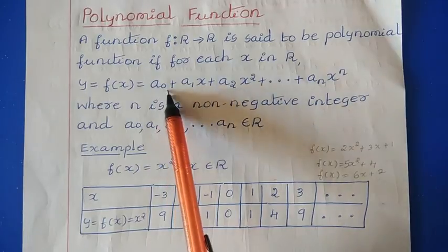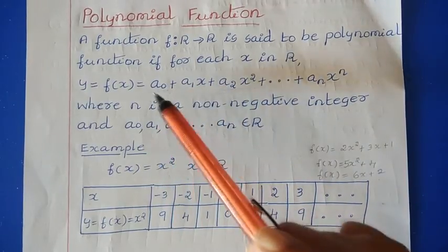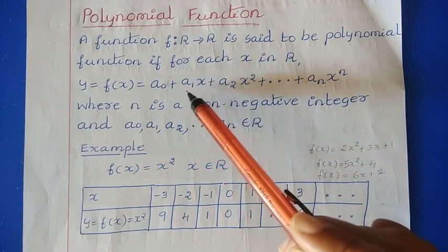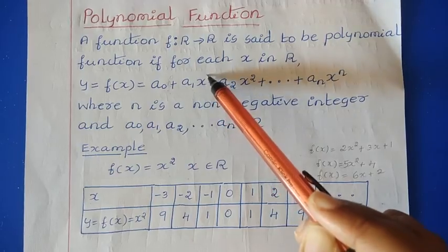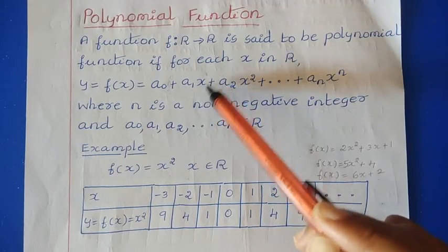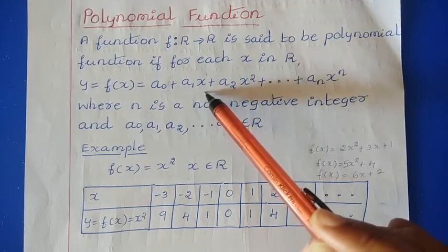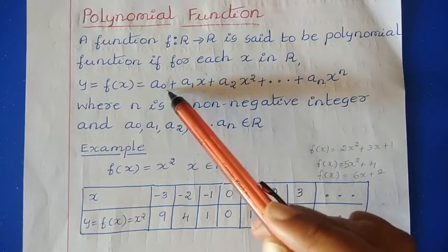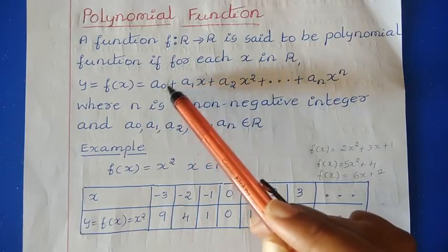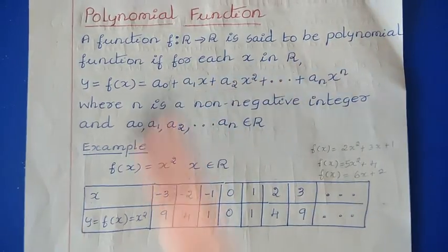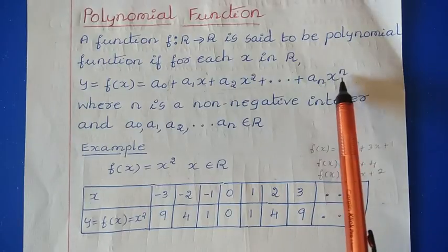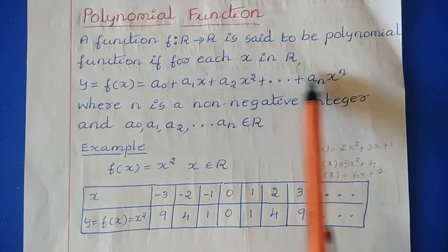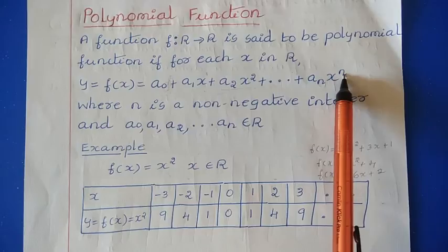Here a0 can be written as x to the power 0, and a1x as x to the power 1 — because x to the power 1 is just x, and x to the power 0 is 1. So a0 times 1 is nothing but a0. So the n value begins from 0, 1, 2 and so on — it is a non-negative integer.